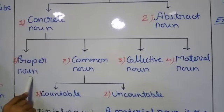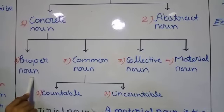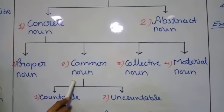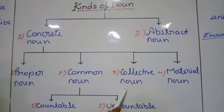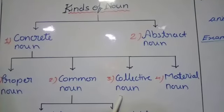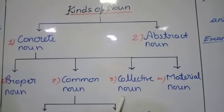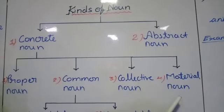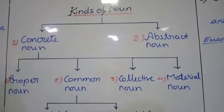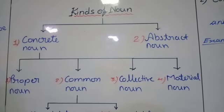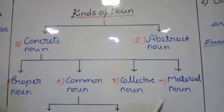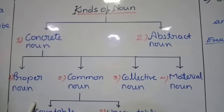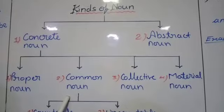In the last video we learnt about proper noun — a particular name of a place, person, things or any idea. Common noun is a name we use commonly for things. Collective noun represents one as a whole, where the same kind of things are called by the same name. Material noun refers to the things by using which we make many other things. We learnt proper noun in detail last time; now let's move to common noun.